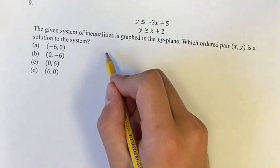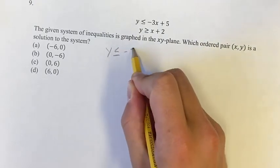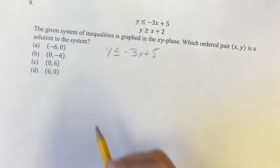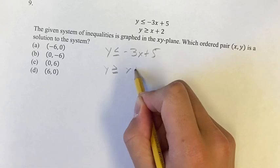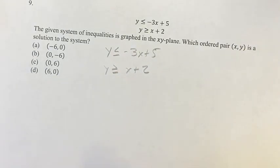In this problem, we're given a system of inequalities. We have y is less than or equal to negative 3x plus 5, and y is greater than or equal to x plus 2. And we're asked, which of the following ordered pairs is a solution to the system?